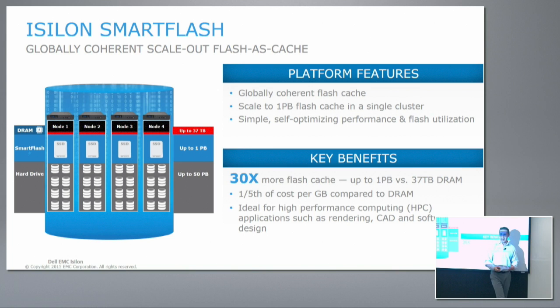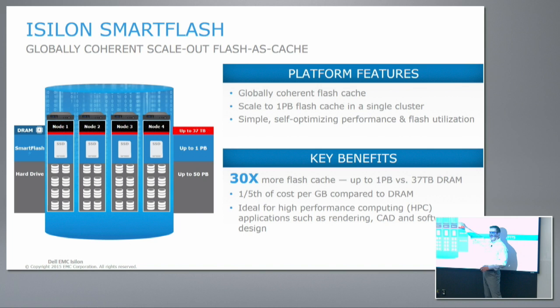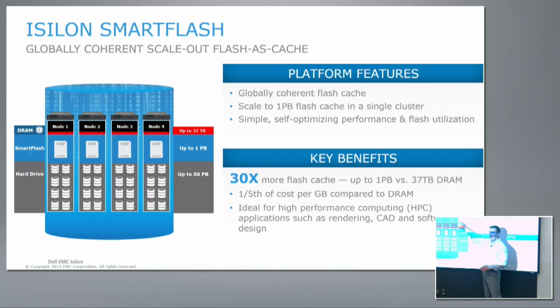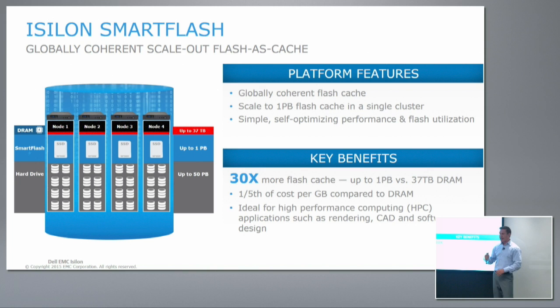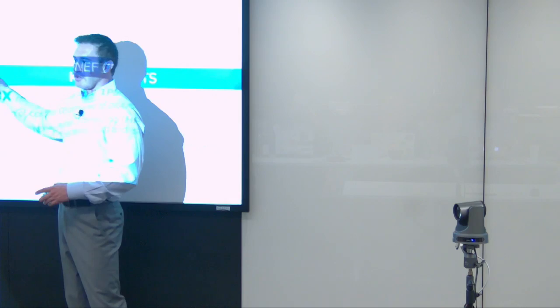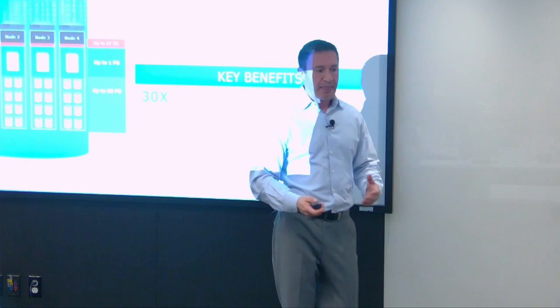At some point, data gets evicted back to spinning disk, but that's only if you're not reading it frequently enough. Every time you read the data, it gets bumped up in terms of how long it stays in flash, L2, or RAM. So frequently reread data stays there for a very long time. You can also see what hits are coming from L1, L2, or L3, and you're able to pin certain data to cache. You can even create a pool of flash that's used as a persistent data pool based on policy.